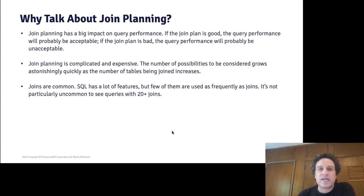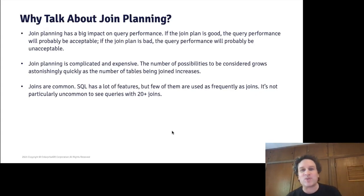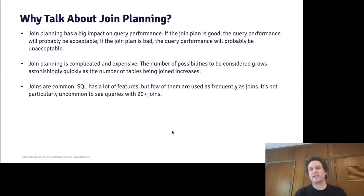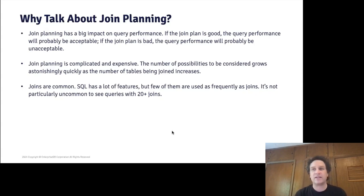The second reason is that join planning is complicated and expensive. The number of possibilities that need to be considered grows astonishingly quickly as the number of tables being joined increases — we'll talk about that in a minute. This is a big consumer of CPU during query planning. The third reason is that joins are really common. A lot of queries use many joins. It's not particularly uncommon to see a query with 20 or more joins, whereas 20 GROUP BY clauses would be unusual.